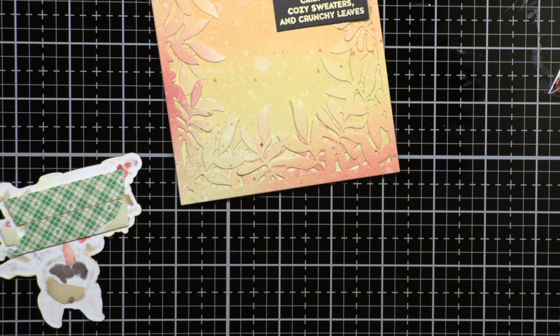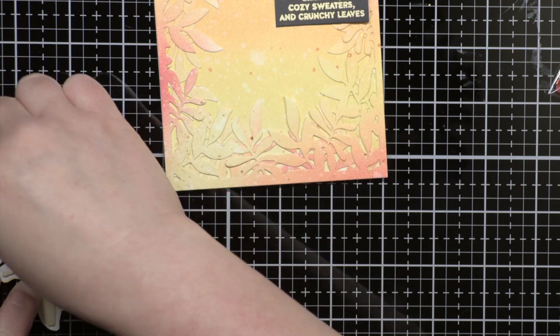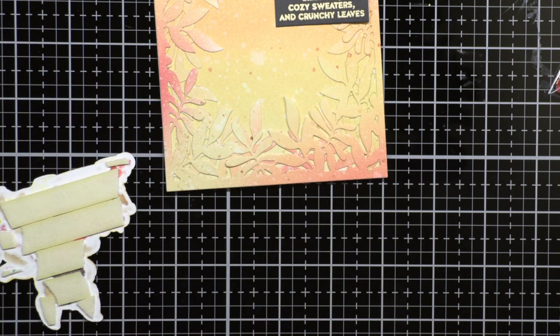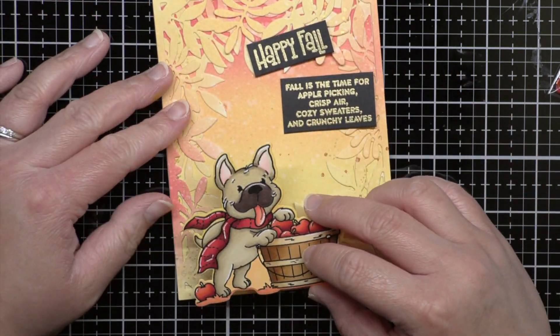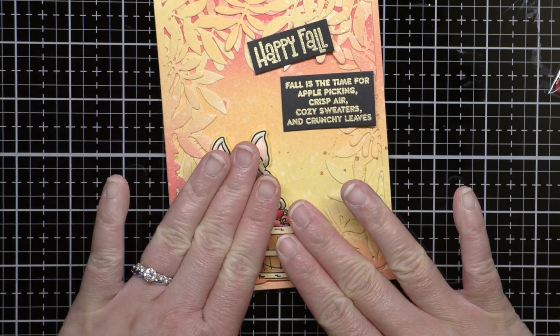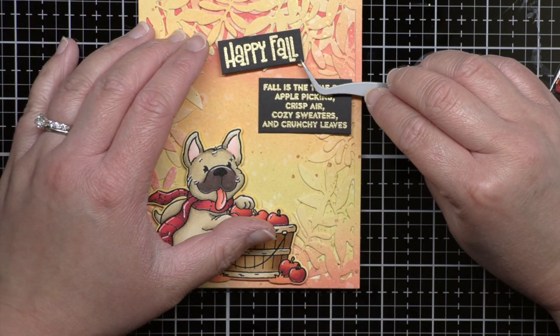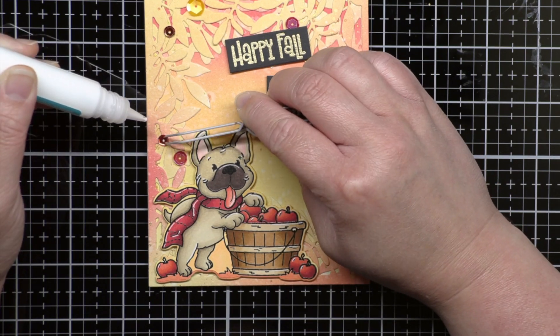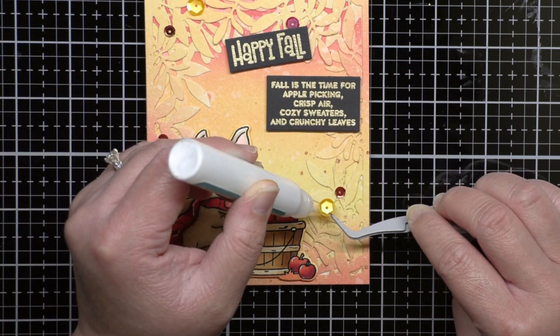Once my panel was dry, I adhered my Frenchie and the sentiments to the blended panels with foam mounting tape. I finished the card by adding sequins from the new Autumn Leaf sequin mix.